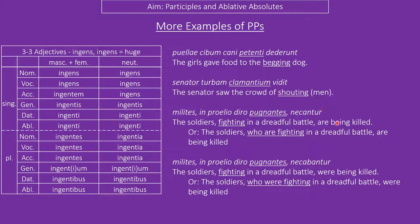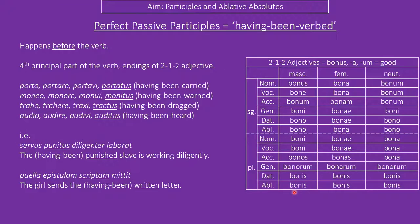If we change necantur from present to imperfect, 'the soldiers fighting in a dreadful battle were being killed', this subclause hasn't really changed. But if we rephrase using a relative clause, we can't say 'who are fighting' when the main verb is past — we have to change that tense too. So be careful about tense agreement. Present participles can often be left as an -ing word rather than being rewritten.